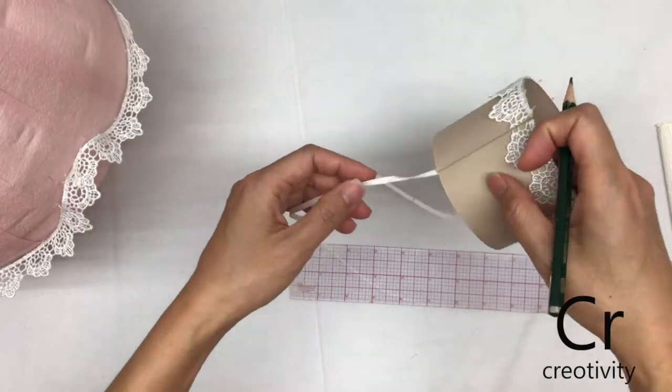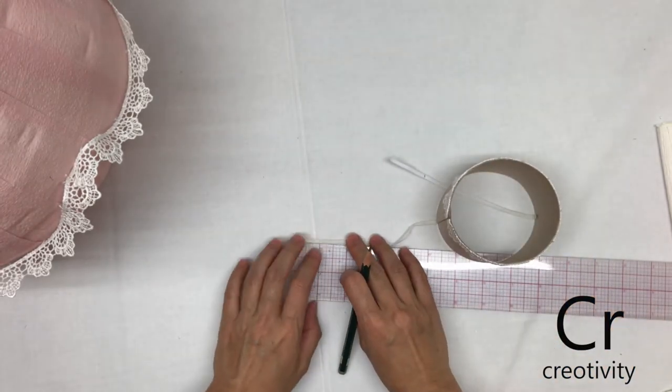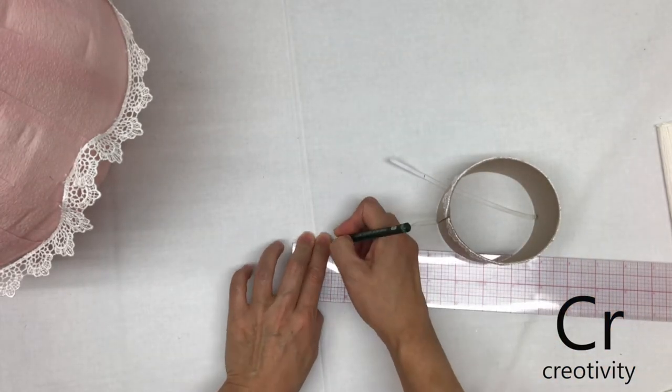At the other end of the ribbon, we're going to make a three quarter inch marking. This is where we're going to glue it to the hot air balloon.